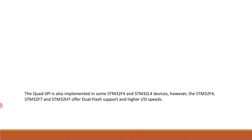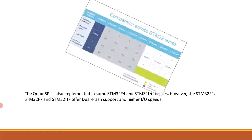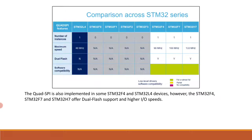A comparison across STM32 series shows instance numbers, maximum speed, dual flash support, and software compatibility. Maximum speed for F4 is 90 MHz, F7 is 100 MHz, and H7 is 133 MHz. Dual flash is available in F4, F7, and H7, and software compatibility is quite good in STM32 H7 Quad SPI features.